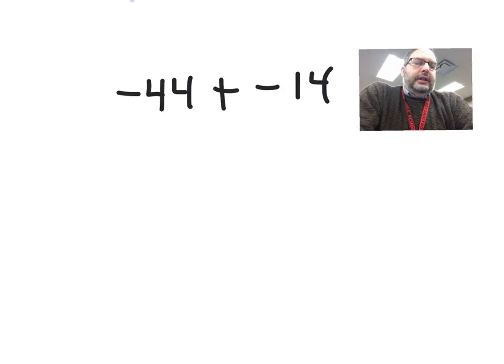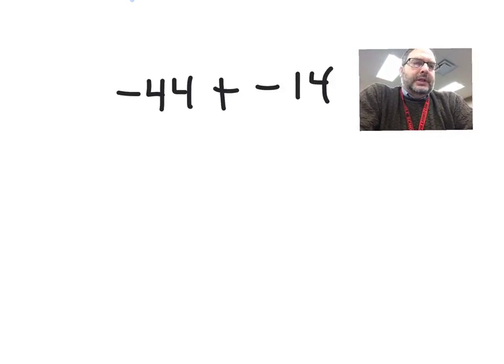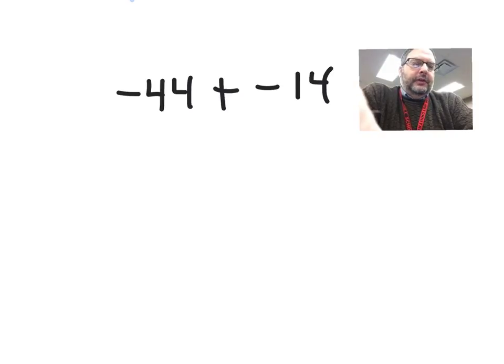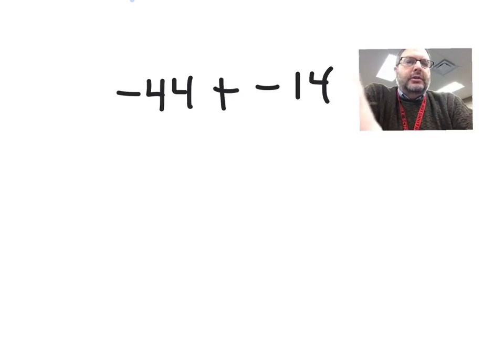Adding and subtracting integers is pretty simple. When the signs are the same, you add and keep the sign. When the signs are different, you subtract and keep the sign of the number that has the larger absolute value.